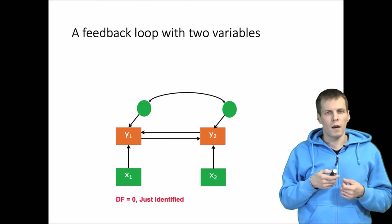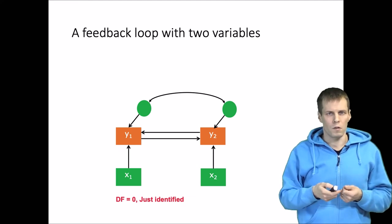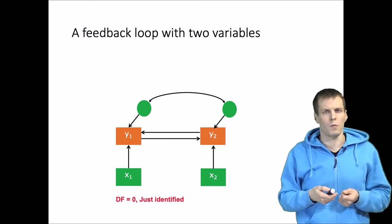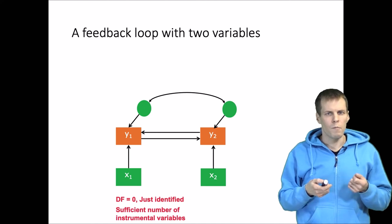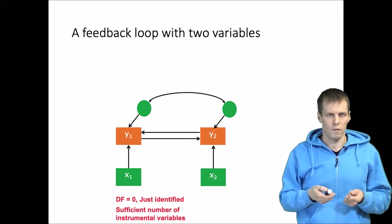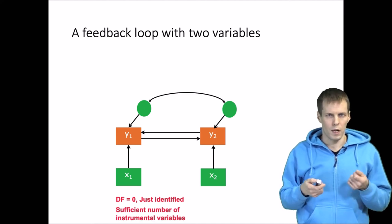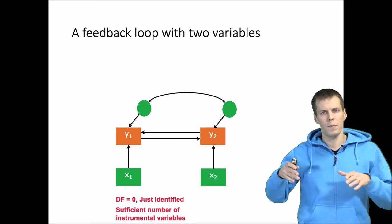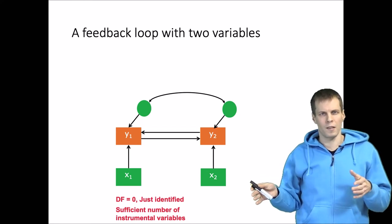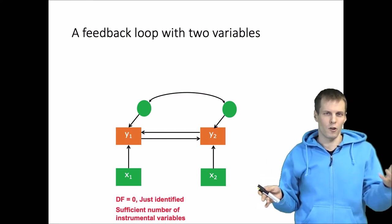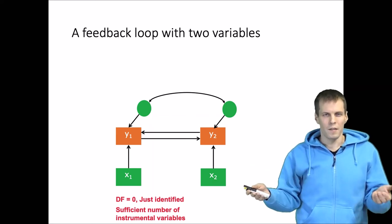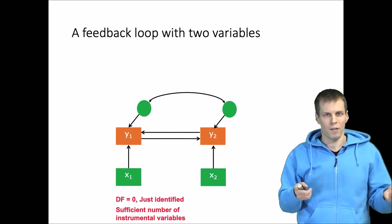An important thing in identification is that we need to have a sufficient number of instrumental variables to allow estimates. There is a clear link between the structural equation modeling literature and the econometrics literature on instrumental variables — if you understand one, you will understand the other better.